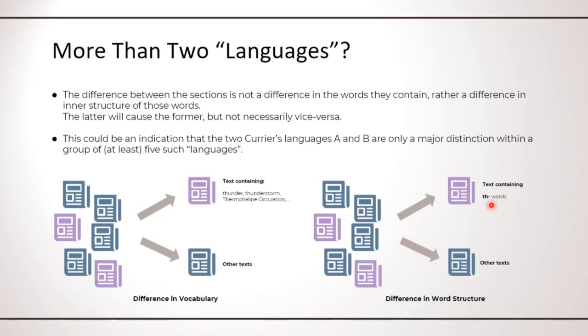And this difference in structure is precisely what happens with the different section in the Voynich. They can be distinguished based on the character's pattern I showed before. And this could indicate that the two Currier languages are just a major distinction within a group of at least five such languages.